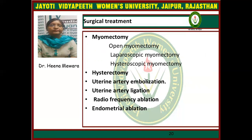Surgical options include myomectomy and hysterectomy. Myomectomy is done in three ways: open myomectomy, laparoscopic myomectomy, and hysteroscopic myomectomy, either abdominally or vaginally. Myomectomy is the enucleation of the myomata from the uterus, leaving behind a potentially functioning organ capable of future reproduction.